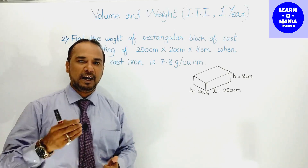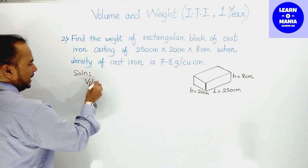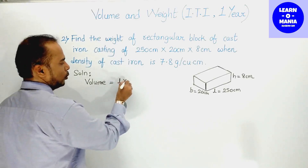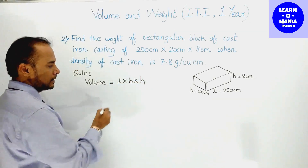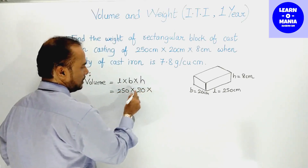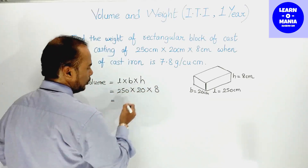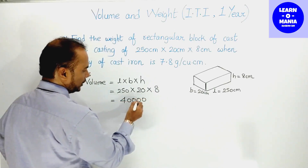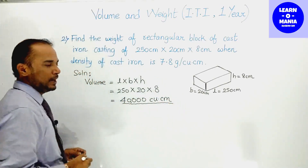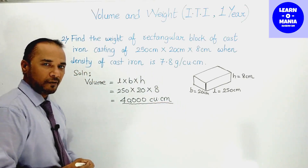Volume के बाद mass find करेंगे, mass के बाद weight find करेंगे। यह cuboid shape में है, तो volume का formula होगा: length × breadth × height = 250 × 20 × 8। यह तीनों figures multiply करने पर मिलेगा 40,000 cubic cm। यह है volume। अब next part — mass find करेंगे।